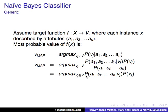So we just conduct the calculations with the numerator: the probability of a1, a2, up until a_n given the value, times the probability of the value. We try each value — has flu, doesn't have flu — with all the attributes of the new patient, and see which one comes up higher. The one that comes up higher is the value we pick.